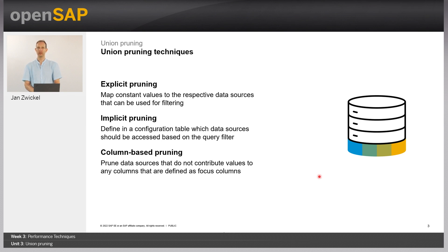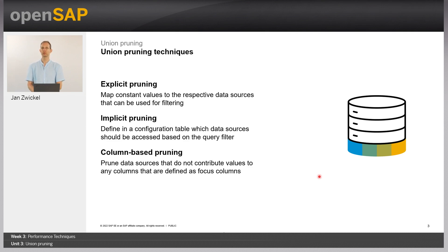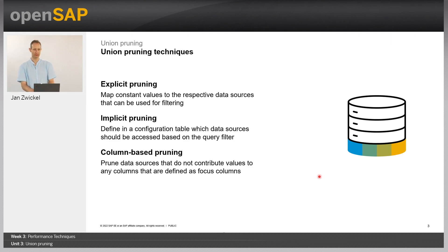This is in a way similar to what you can do with partition pruning, but in partition pruning you are much less flexible because you rely on your filter matching the partition criteria. With union pruning, you are free to define what criteria you want to have for a certain data source.